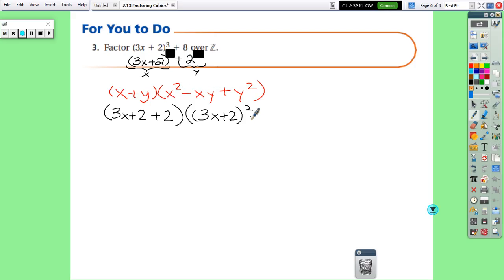Then for this term, we just multiply these two together, so it would be minus 2 times (3x + 2), and then plus y², while y² would be 2², which is 4.